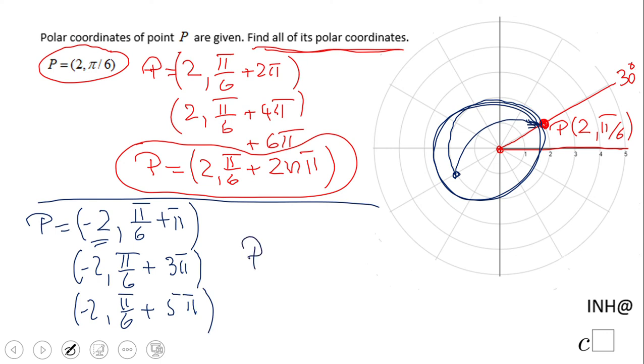So what is the final form of P? Negative 2, π/6 plus an odd number: 3, 5, 7. How are we going to do that in this format? 2n plus 1, right? Whatever value n is—1, 2, 3—2n plus 1 would be an odd number.